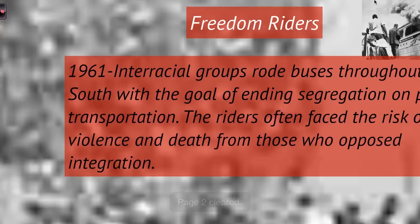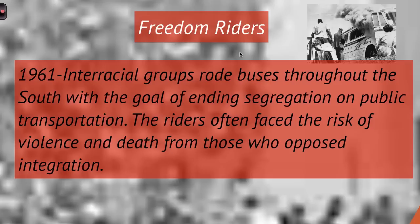Another group that practiced nonviolent protest was the Freedom Riders. Since public buses were also segregated, an interracial group of Black and white riders traveled by bus throughout the South with the goal of ending segregation on public transportation. Their journey was very violent — buses were attacked — and they faced frequent violence. The confrontations forced the federal government to intervene, which brought national attention to the issue, which was one of their goals.